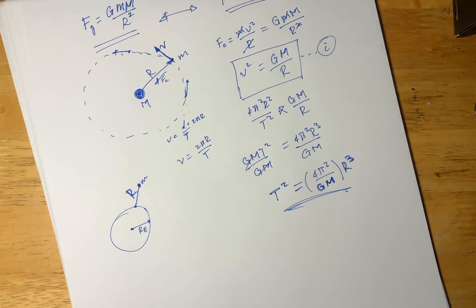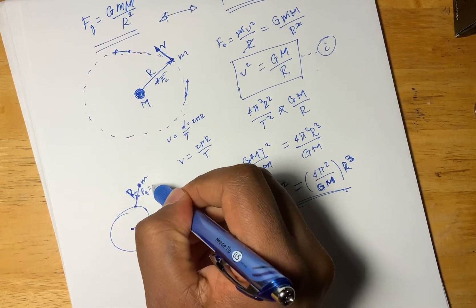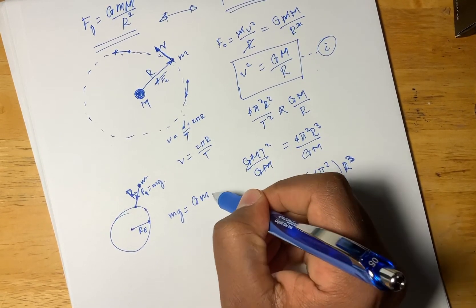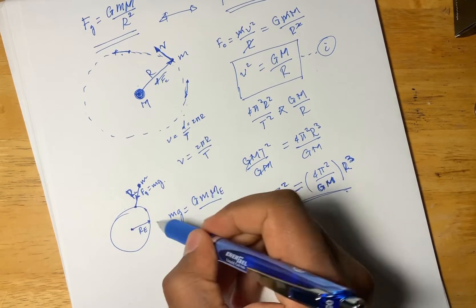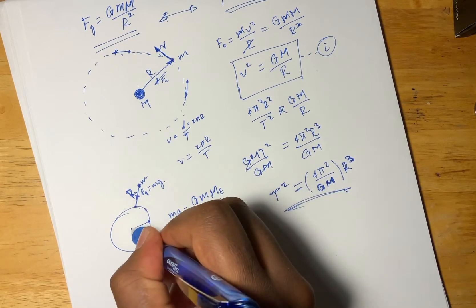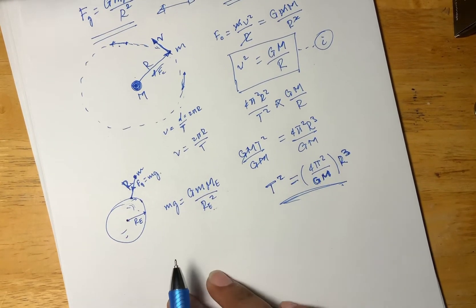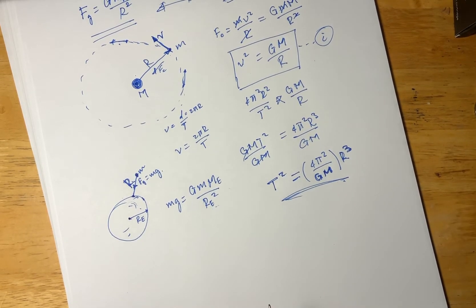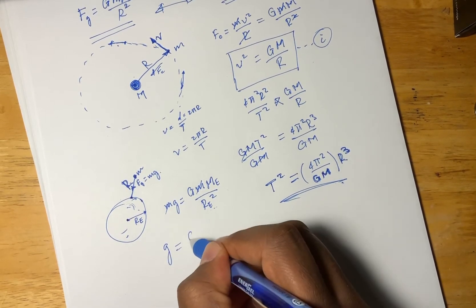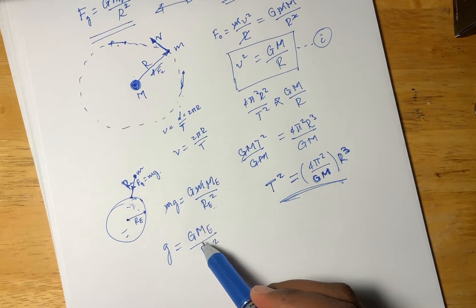Measuring from the center of mass is very important. The force due to gravity — weight — equals mg. And we know that g equals capital G times the mass of the Earth over the radius of the Earth squared.